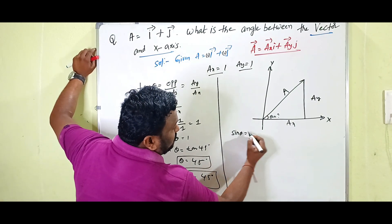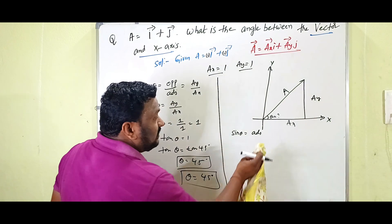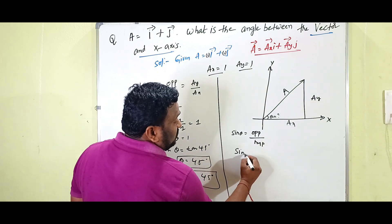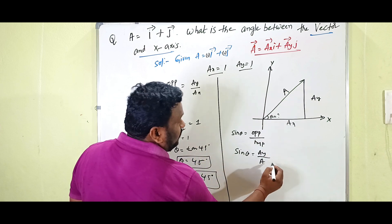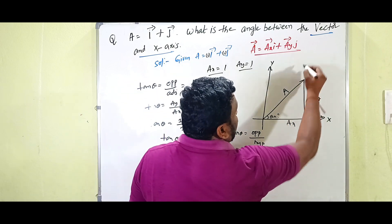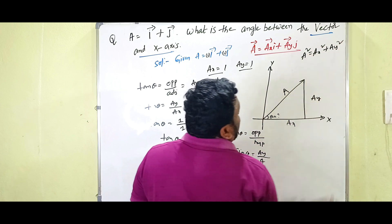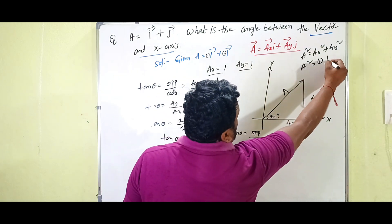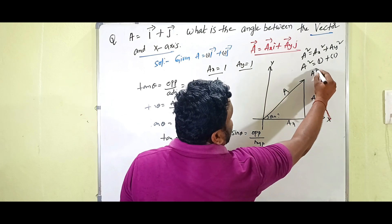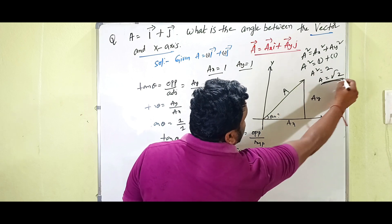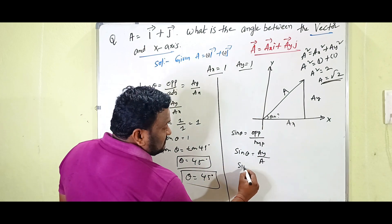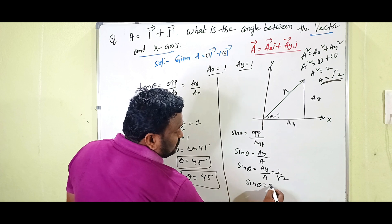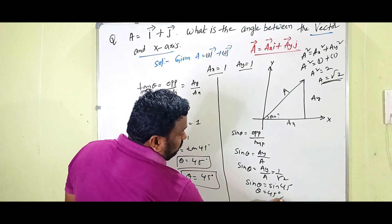Using the sine method: sin θ equals opposite side by hypotenuse, which is ay by a. To find the magnitude a, we use a² = ax² + ay² by Pythagoras theorem, giving a² = 1 + 1 = 2, so a equals root 2. Therefore sin θ equals 1 by root 2, which gives θ equals 45 degrees.